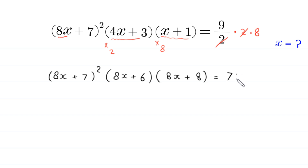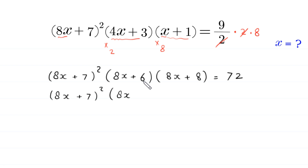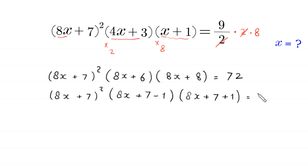...which equals 72. We rewrite 8x+6 as (8x+7)−1 and 8x+8 as (8x+7)+1. Now we suppose that 8x+7 is equal to y.